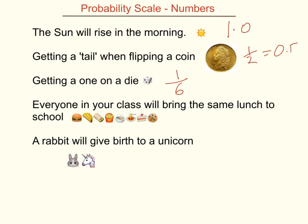Everyone in your class will bring the same lunch to school — I'm going to say that's highly unlikely. I'll guess that it's sort of one chance in 10, though it's probably lower than that. If we did an experiment, we could find out what the probability was. And the last one: a rabbit will give birth to a unicorn — that's impossible, so the probability is going to be 0.